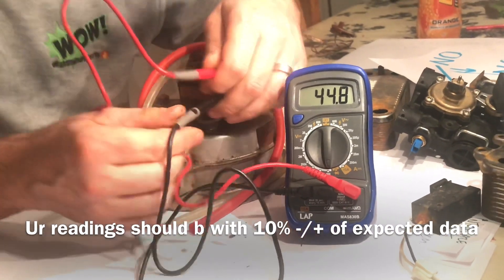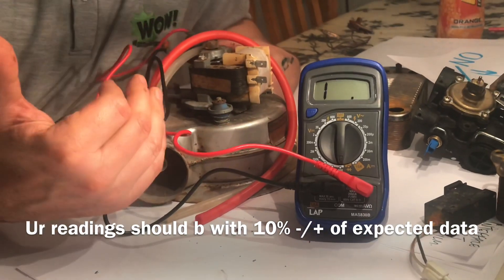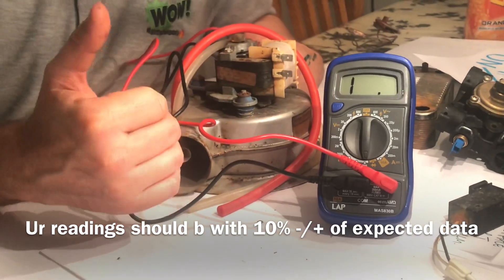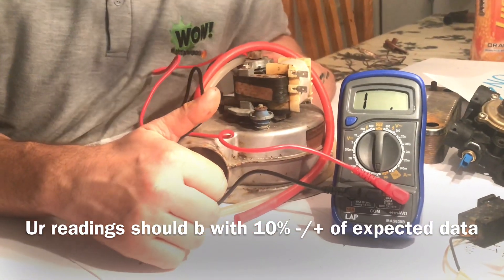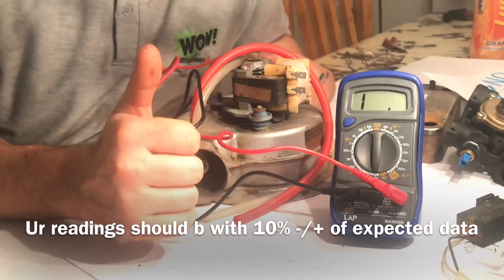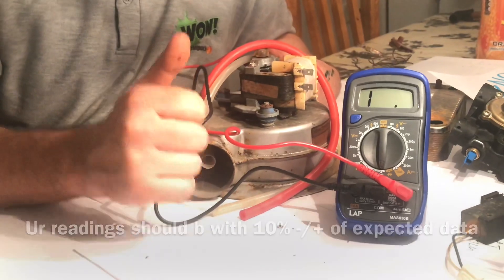45 ohms. And then with that information, what you would do is check the resistance readings, what it should be, against the manufacturer's instructions. It's going to be within 10%, so plus or minus either way.